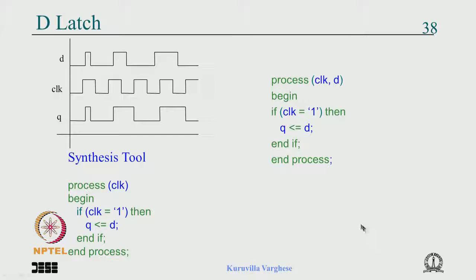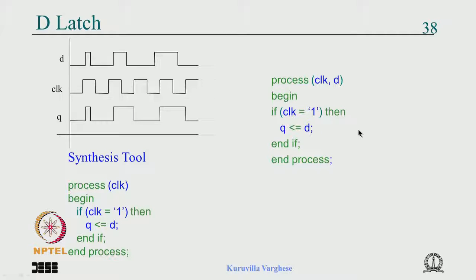The solution for the D latch is to put D in the sensitivity list, so that when clock is 1 and there is an event on D, it triggers a computation. The correct code for both simulator and synthesis tool is: process(clock, D) begin if clock is equal to 1 then Q gets D end if end process. The synthesis tool synthesizes a latch and the simulator correctly simulates D latch behaviour.